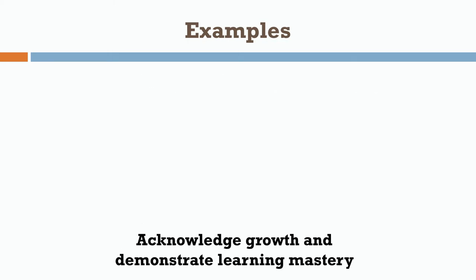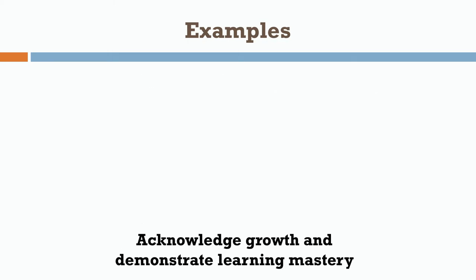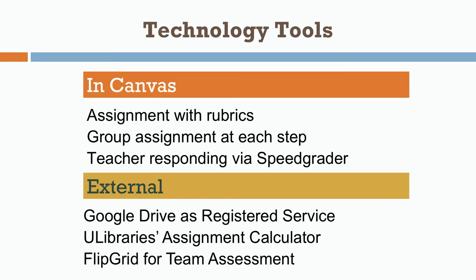The important thing to think about with summative evaluation is that you want students to acknowledge growth and demonstrate their learning mastery. As with formative feedback, there are technology tools you can use. Assignments within Canvas offer opportunities to incorporate rubrics and group assignments with group feedback at each step in a longer process. In Canvas you can respond via Speed Grader, offering comments that are written, typed, spoken, or videotaped.